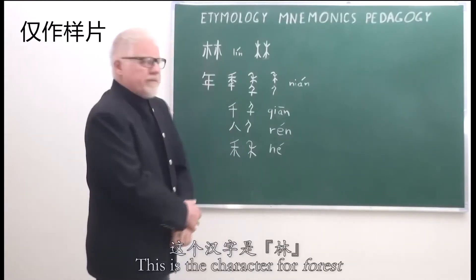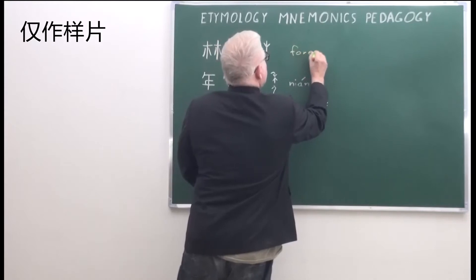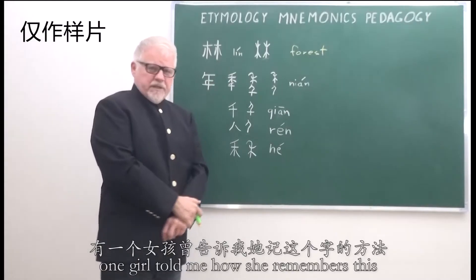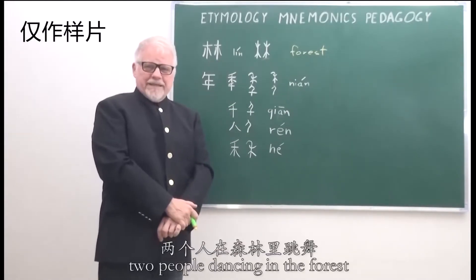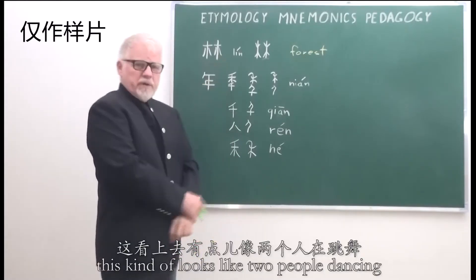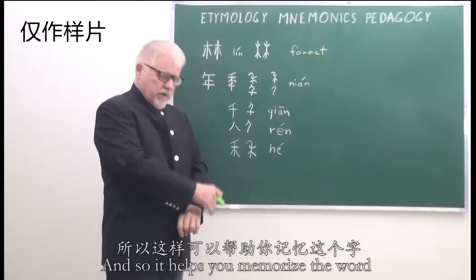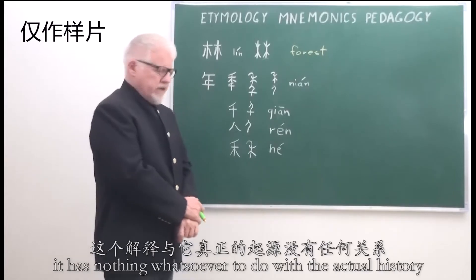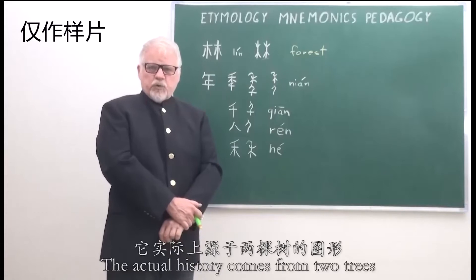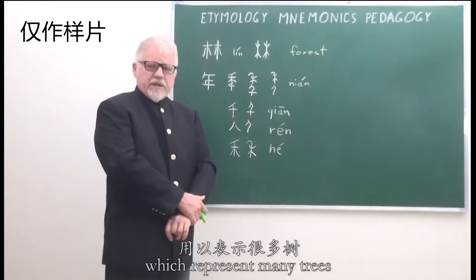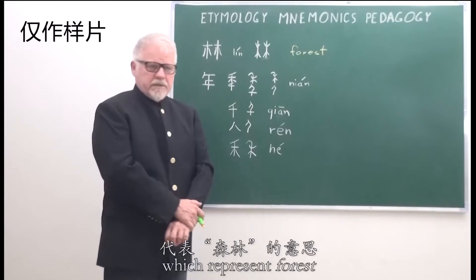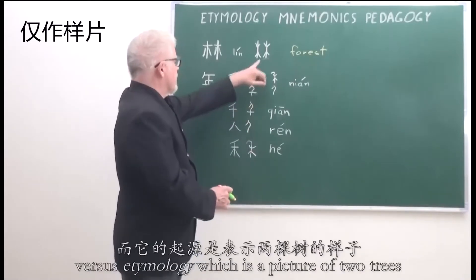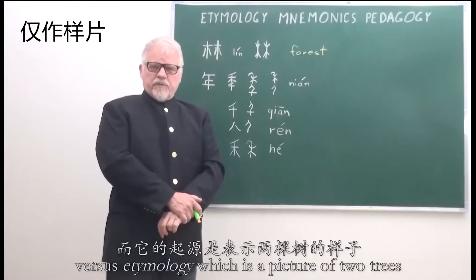What is an example of a mnemonic? This is the character for forest. One girl told me how she remembers this — she says it's two people dancing in the forest. Well, this kind of looks like two people dancing, and so it helps you memorize the word for forest. But unfortunately it has nothing whatsoever to do with the actual history. The actual history comes from two trees, which represent many trees, which represent a forest. So this is the difference between mnemonics — two people dancing in the forest — versus etymology, which is a picture of two trees.